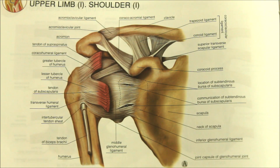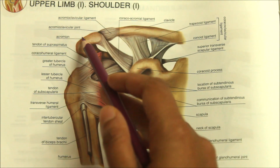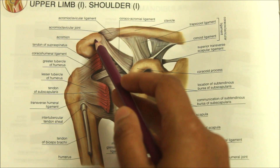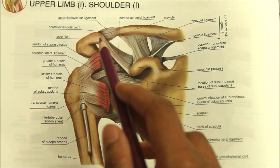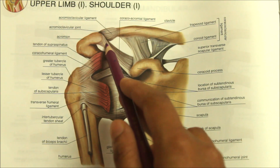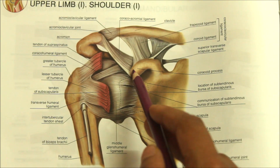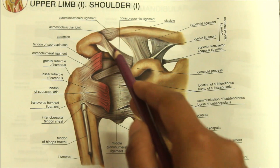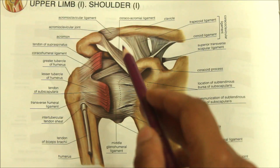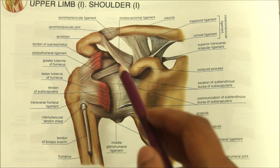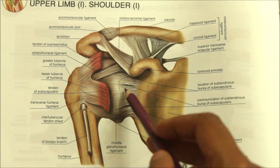Firstly we have the coracoacromial arch. As you can see here, this is the coracoid process and this is the acromion process of the scapula. The coracoacromial arch is a protective arch formed by the smooth inferior aspect of the acromion process and the coracoid process of the scapula, with the coracoacromial ligament spanning in between them. This osteoligamentous structure overlies the head of the humerus, preventing its upward displacement from the glenoid cavity.